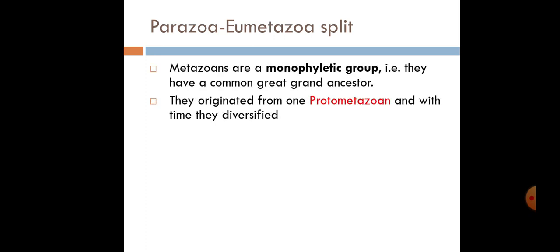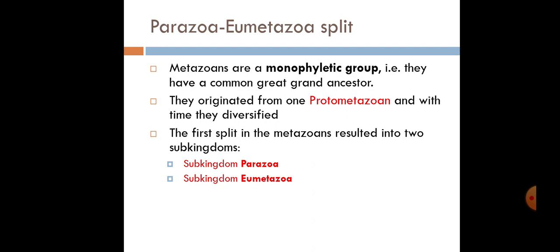This first split is called the Parazoa-Eumetazoa split. Metazoans are a monophyletic group — they share a common ancestor. According to the colonial theory, scientists believe that we originated from flagellates that came together. The volvocid flagellates — flagellates in plant form — were the first flagellates believed to have come together.